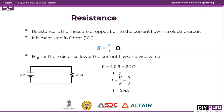Resistance and current are inversely proportional. When you have higher resistance, there will be a very low amount of current flowing through the circuit. And if you have very low resistance, then a greater amount of current flows through the circuit.